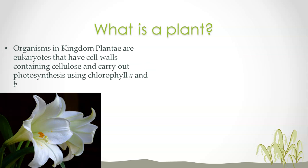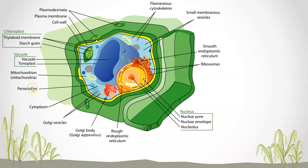Organisms in the kingdom Plantae are eukaryotes, which means they have a true nucleus. They have cell walls containing cellulose, and they use chlorophyll A and chlorophyll B. Here is a diagram of a plant cell. You can see there's a cell wall — we don't have that as animals. That cell wall is very rigid and protective. All cells have a cell membrane, which is essential for controlling homeostasis between inside and outside environments. Everything else is very similar to an animal cell.